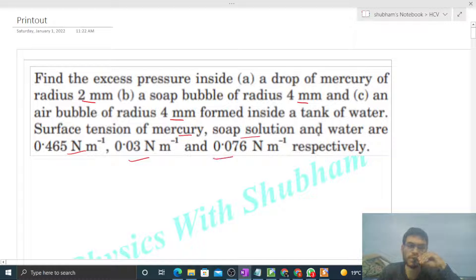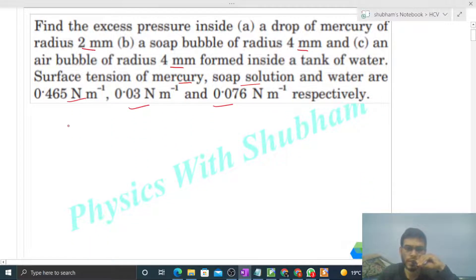Fine, so this is a straightforward question. All the data is given; you just have to put the values. Let's discuss option A. So we have a drop of mercury and its radius is given as 2 mm. Like this, there will be mercury inside, and surface tension of the mercury is 0.465 Newton per meter. This value is also given.